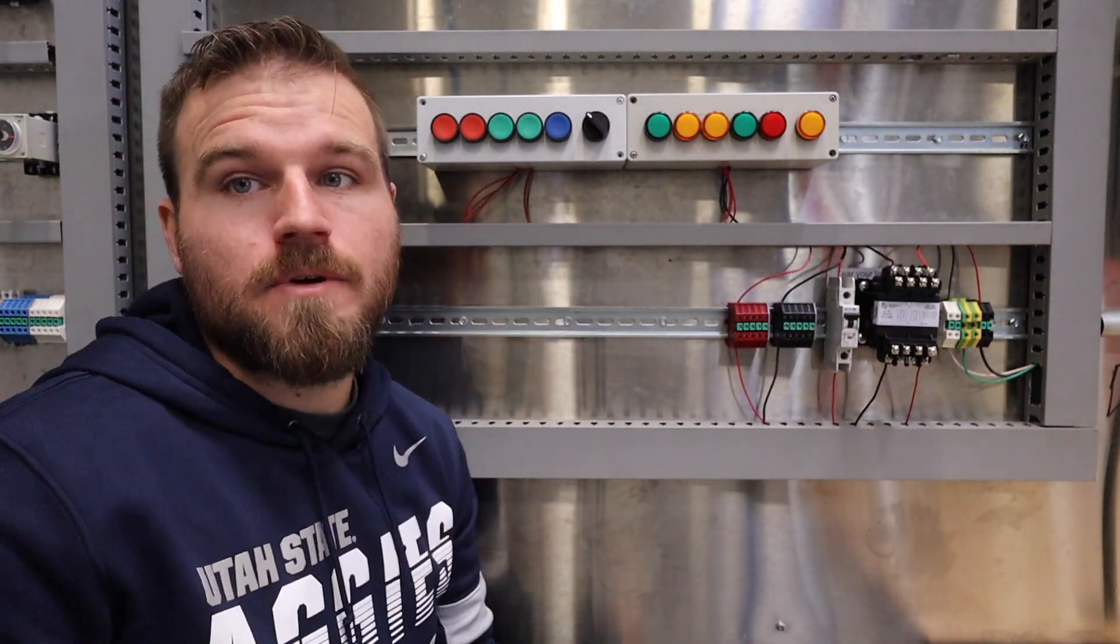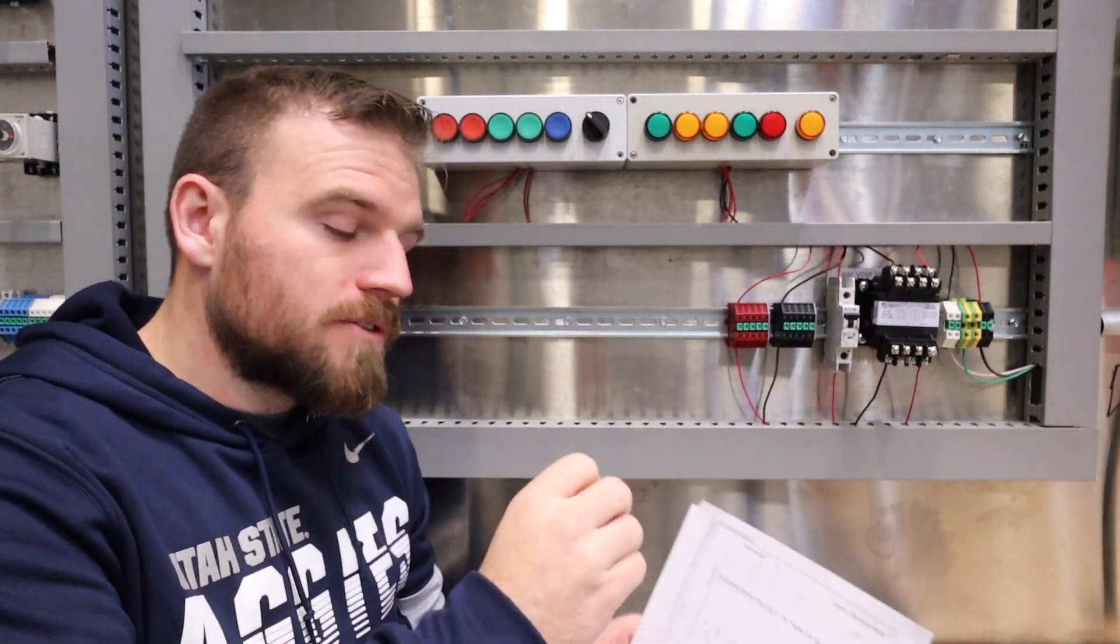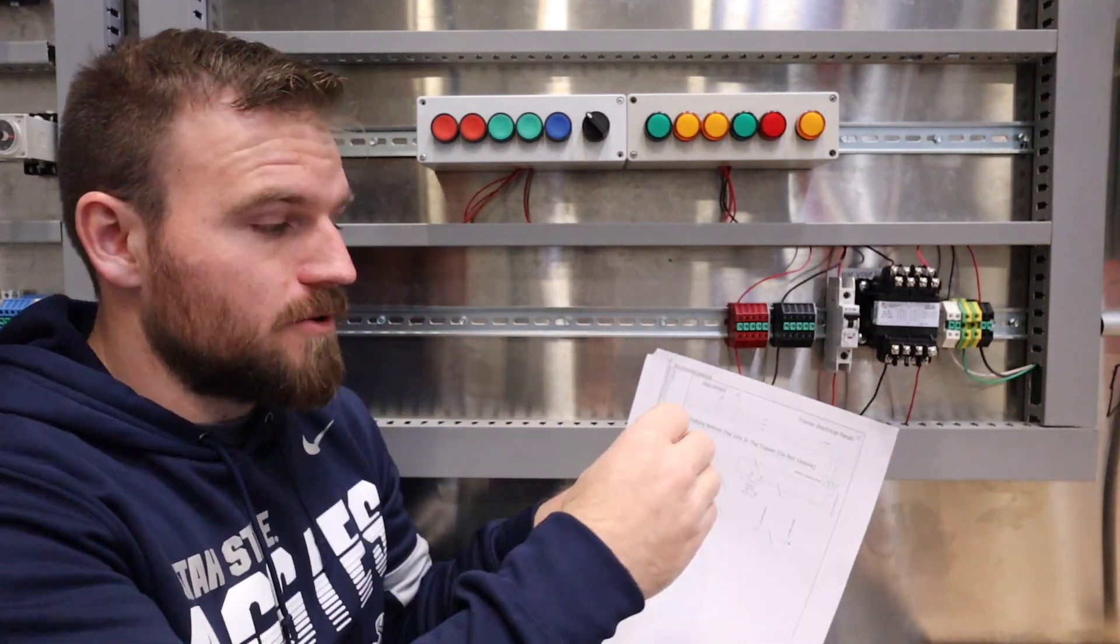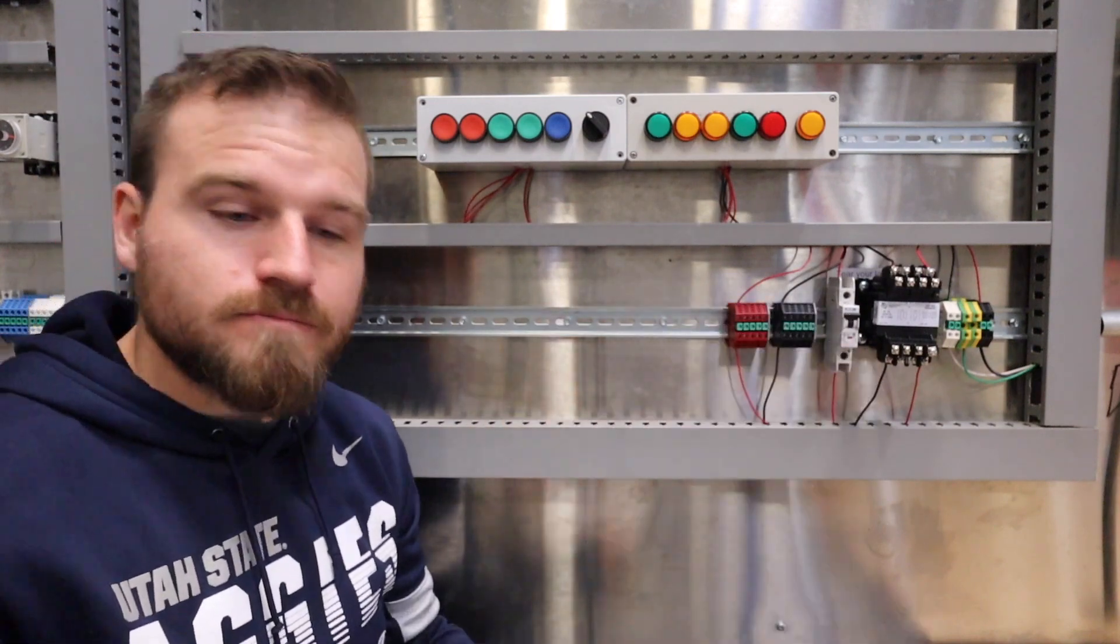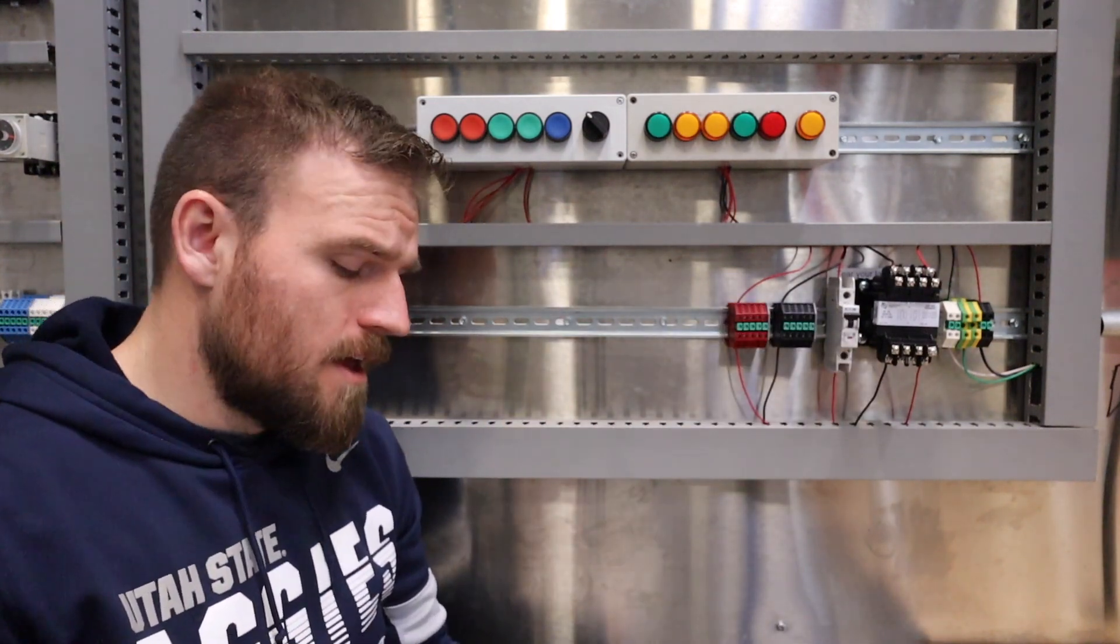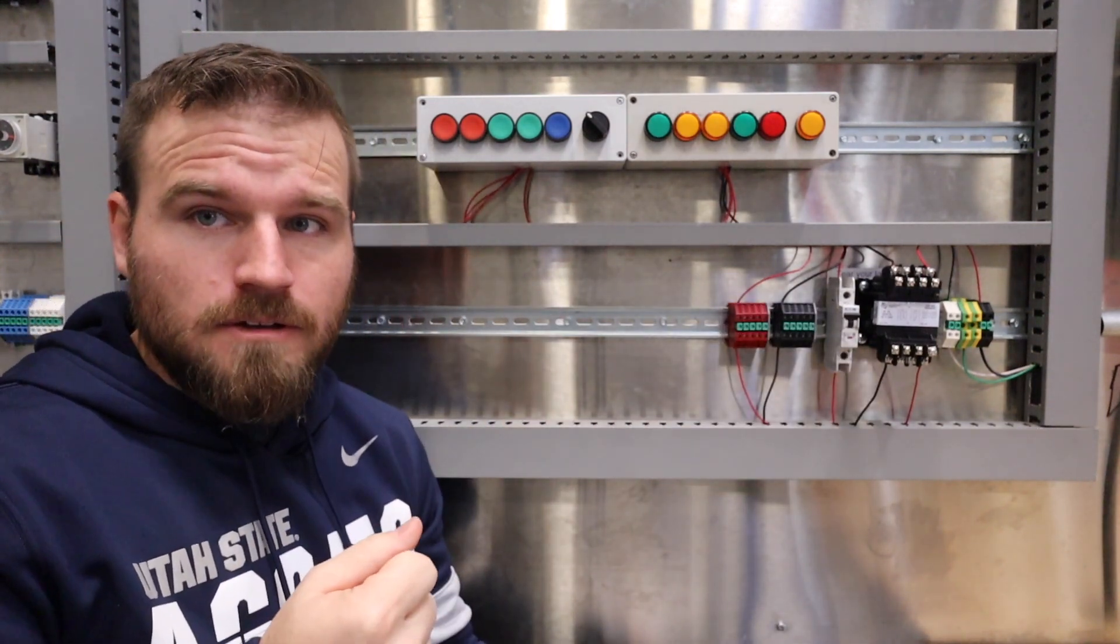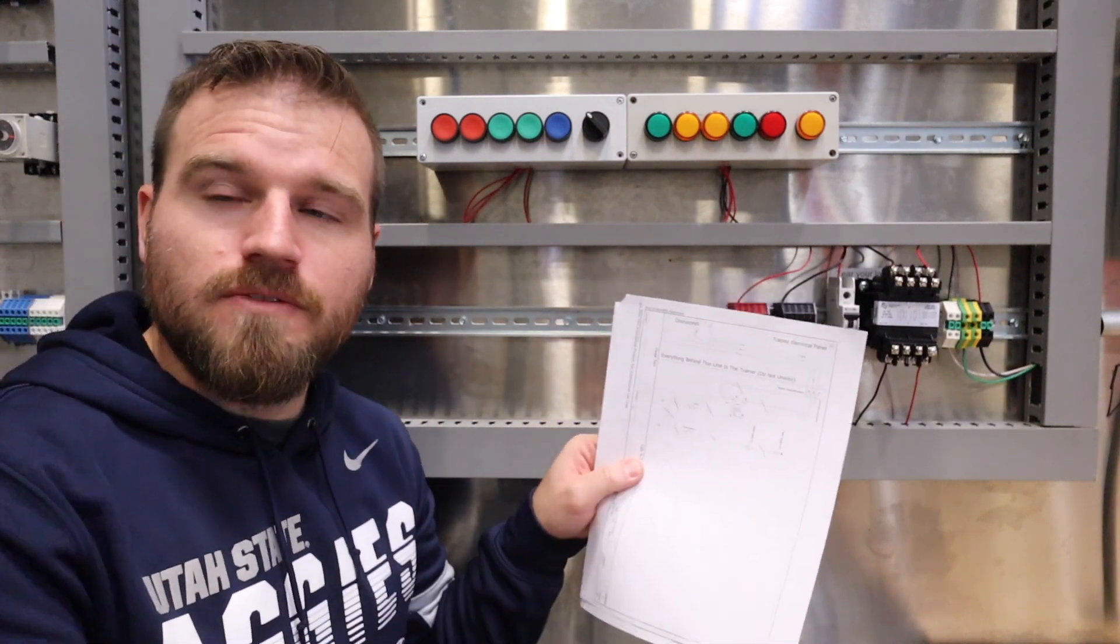So a couple of other tips I want to throw out there - as you're going through and putting the wires on, make sure you are possibly ticking them off, just like we did before, just draw a line through them. You can also take a colored pencil and just highlight the wires that you've already done.